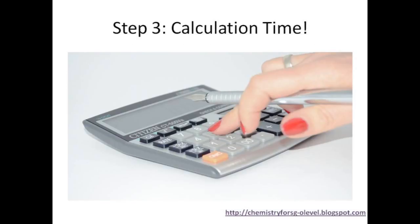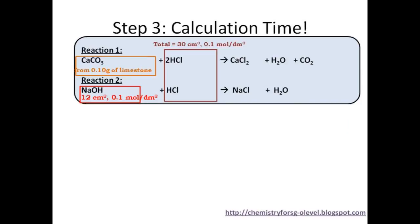I've covered all the numerical information given in this question, so next let's go on to calculation. First, let's find the number of moles of sodium hydroxide. The number of moles is equal to volume in dm³ multiplied by concentration in mol per dm³. Next, let's find the number of moles of hydrochloric acid used for both reactions 1 and 2 using the same formula: volume in dm³ multiplied by concentration.